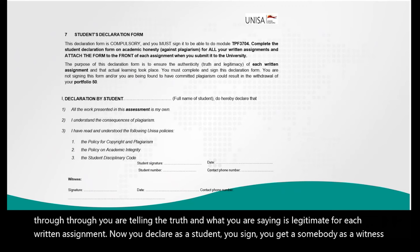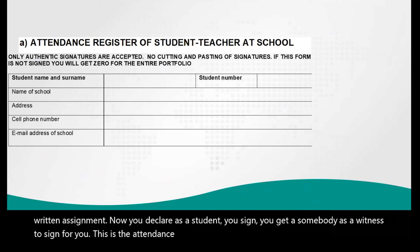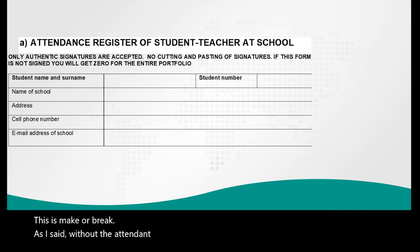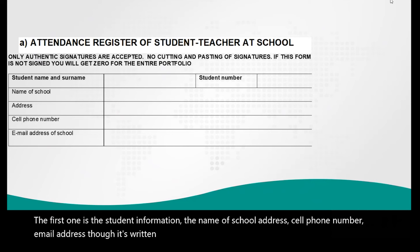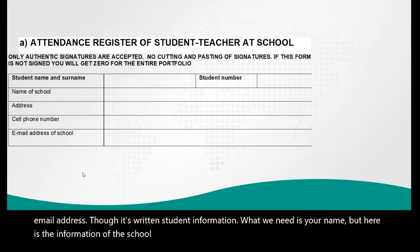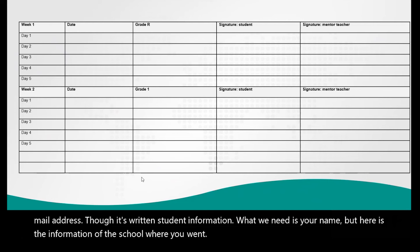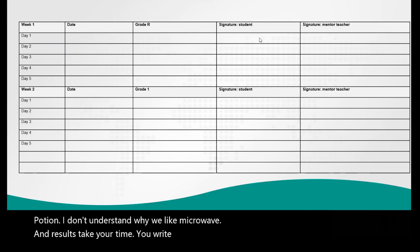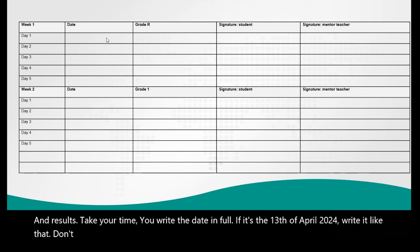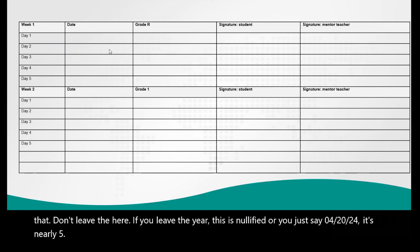This is the attendance register — this is a make-or-break document. As I said, without the attendance register we do not mark your portfolio completely. The first section is student information: name of school, address, cell phone number, and email address. What we need is your name and the information of the school where you went. Complete this portion carefully. Write the date in full — if it's the 13th of April 2024, write it like that. Don't leave out the year, otherwise it is nullified.